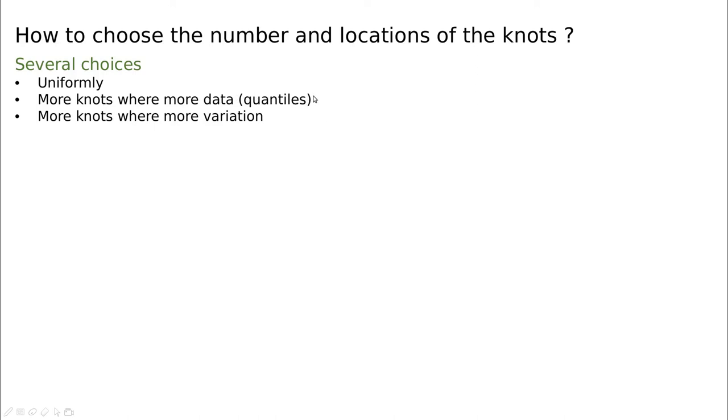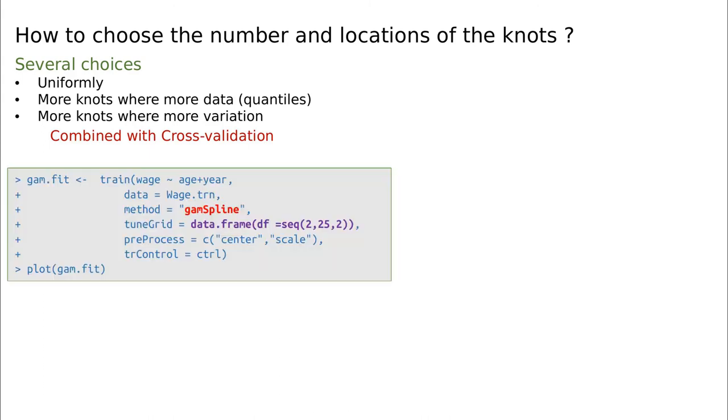And this is the default choice. First, calculate the quantiles of the data. And when you have more information at some point of the graph, you're going to use more knots. And the other thing is when you have more variability. So you have a larger, let's say, variance in some parts of the graph, you're going to use more knots. As I was saying, this is the default choice. And as usual, we have cross-validation combined with these techniques in order to improve the idea.